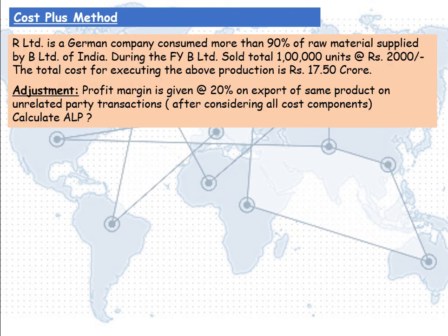R Limited is a German company that consumed more than 90% of the raw materials supplied by B Limited of India. During the financial year, B Limited sold a total of 1 lakh units at the rate of Rs 2,000 per unit. The total cost for executing the above production is Rs 17,50,00,000. The profit margin given is 20% on export of the same product in unrelated party transactions, after considering all cost components. Calculate the arms length price.